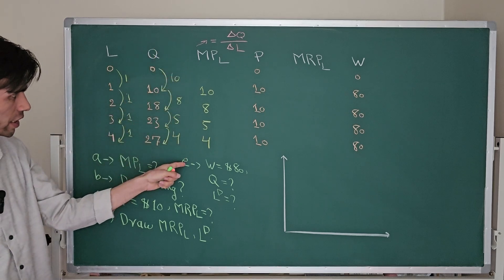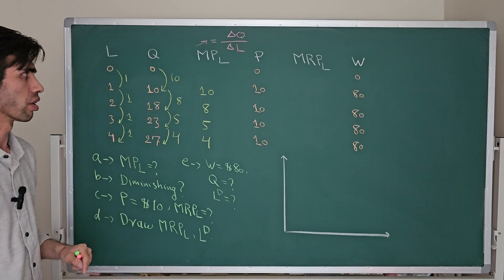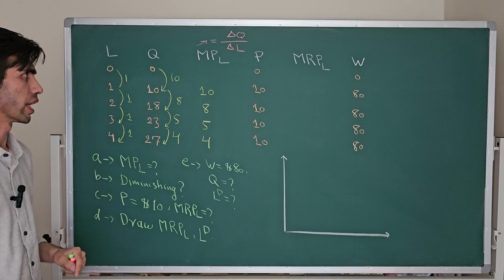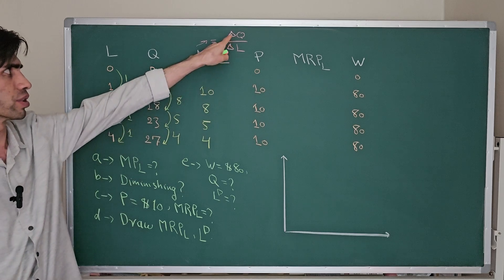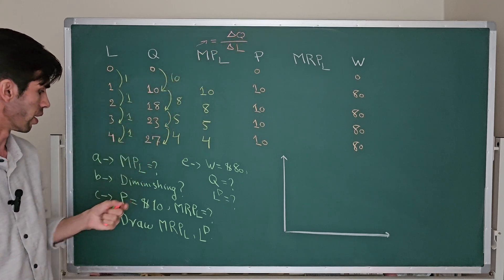That completes part A — the marginal product of labor calculated using the formula: change in quantity divided by change in number of labors.